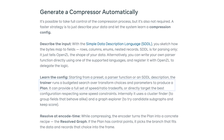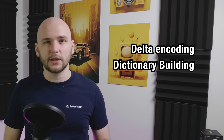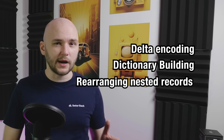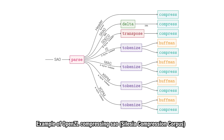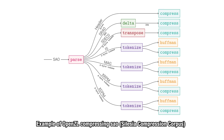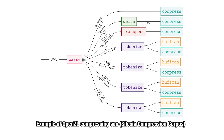Then you generate a plan. An offline trainer searches through different transform sequences. These transforms are basically reversible operations that expose patterns — like delta encoding, dictionary building, or rearranging nested records. Then you encode the data: when you compress it, the chosen plan is embedded right into the file.